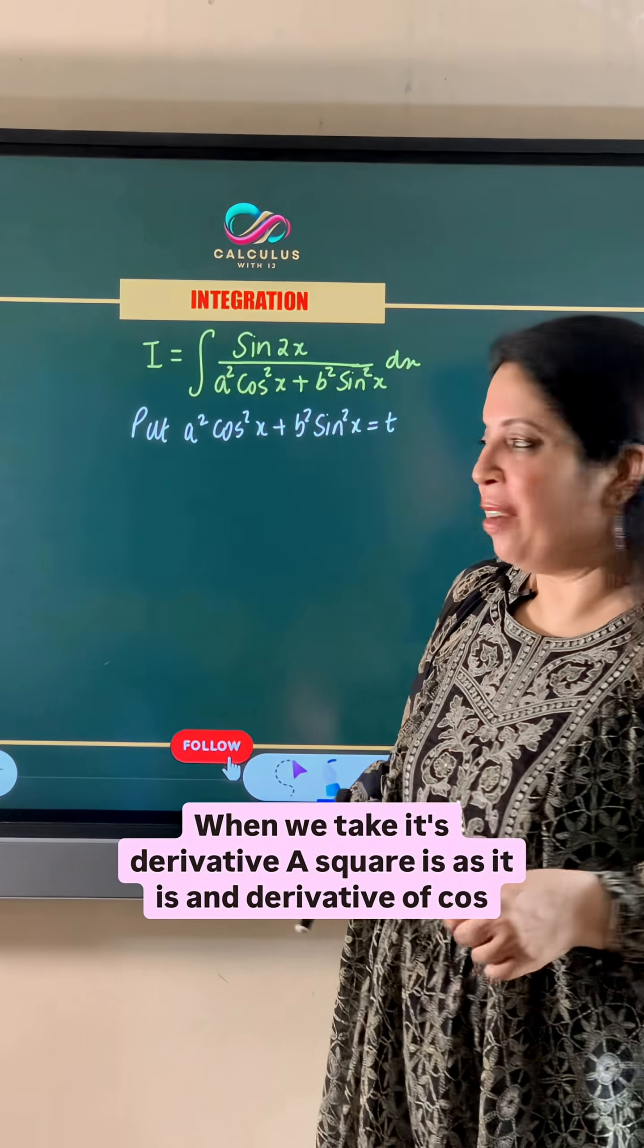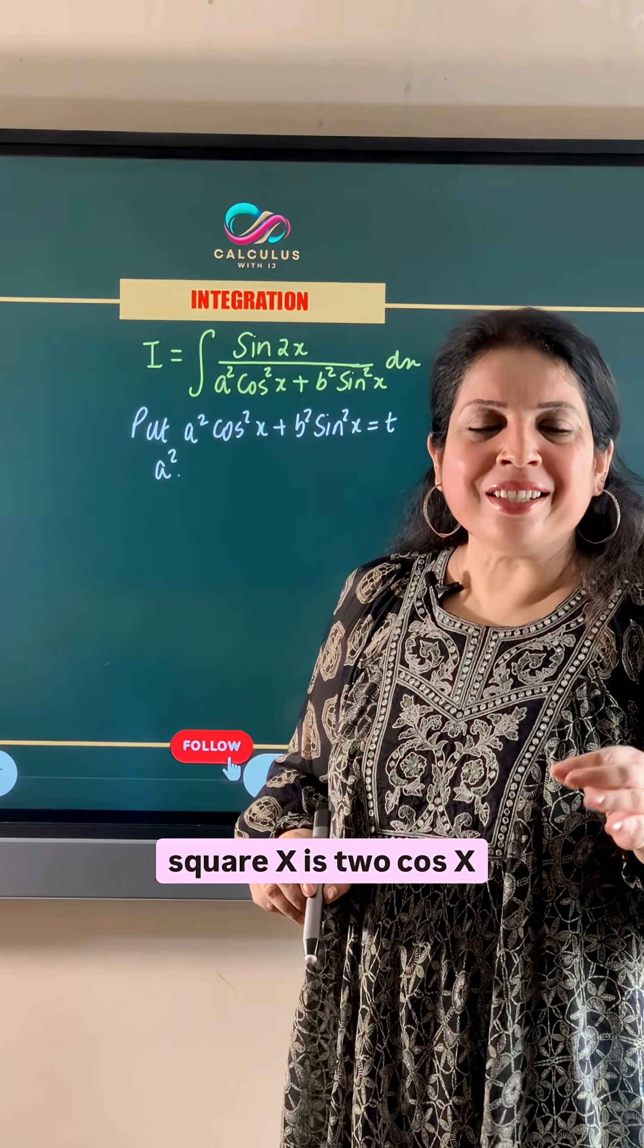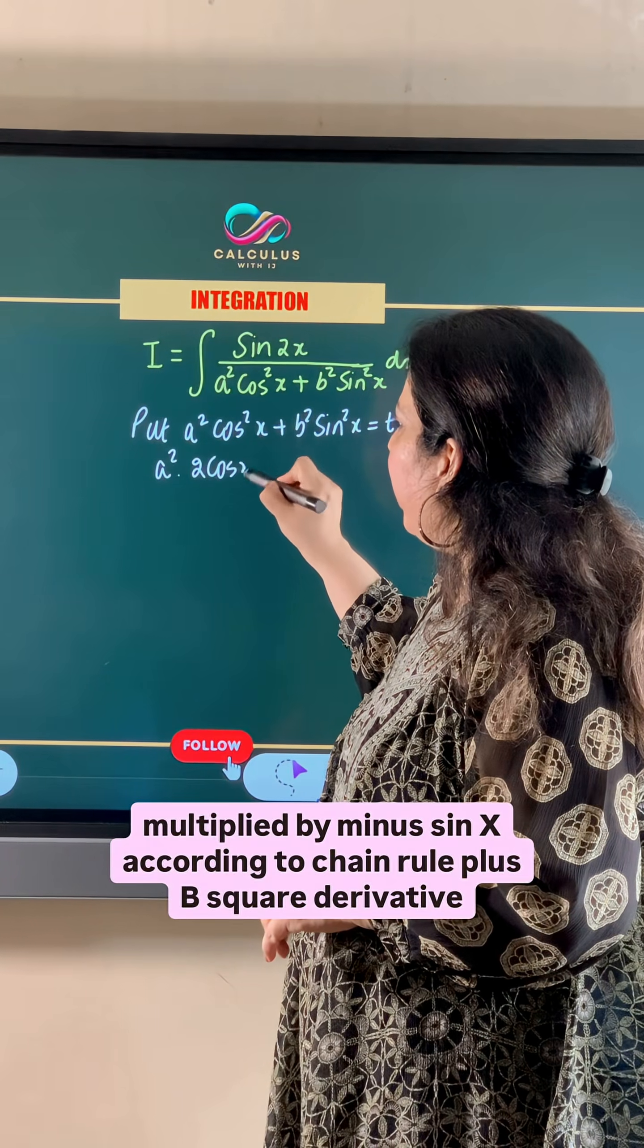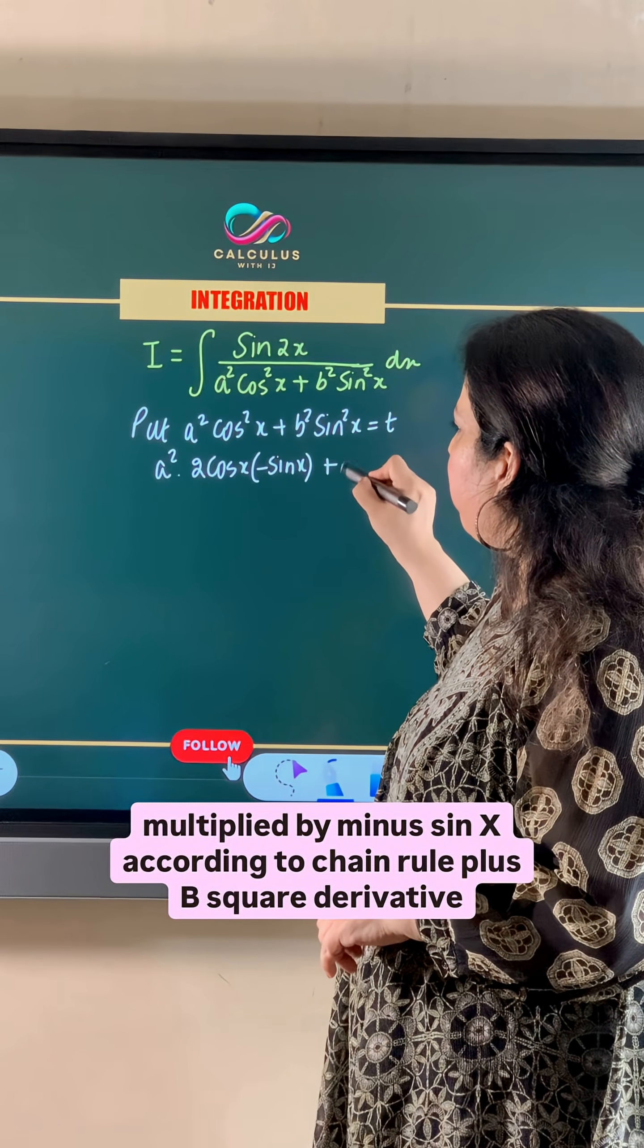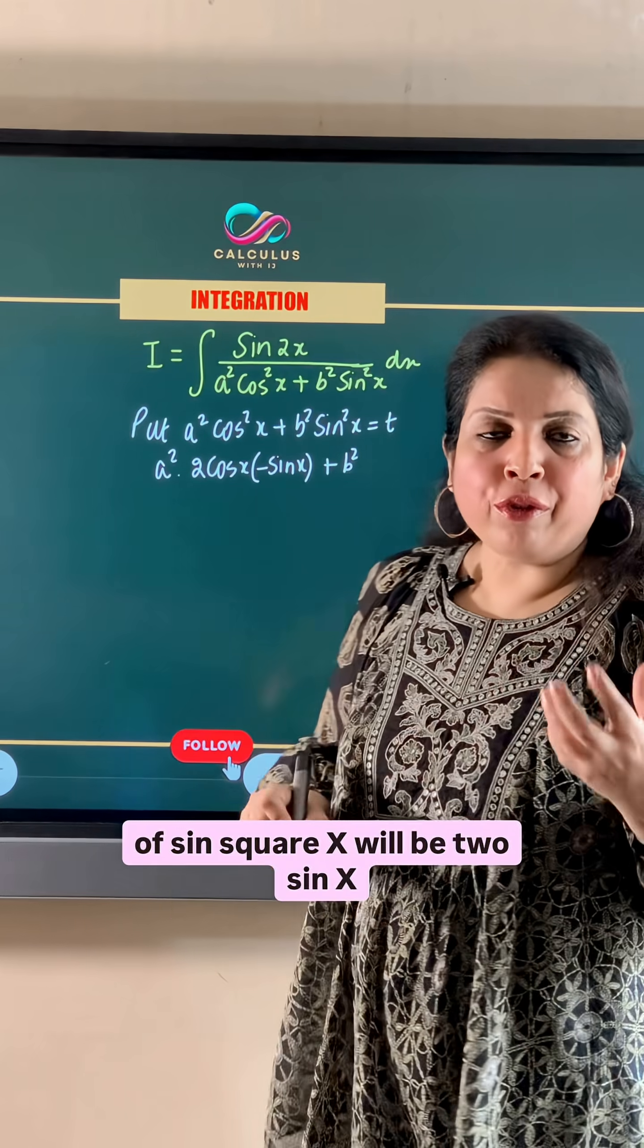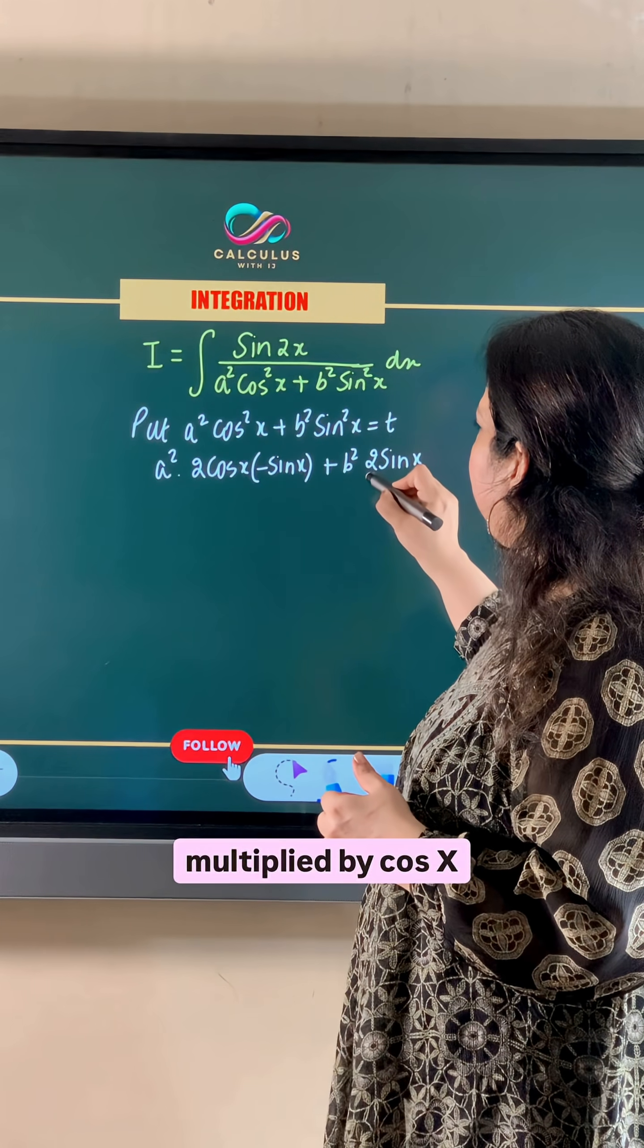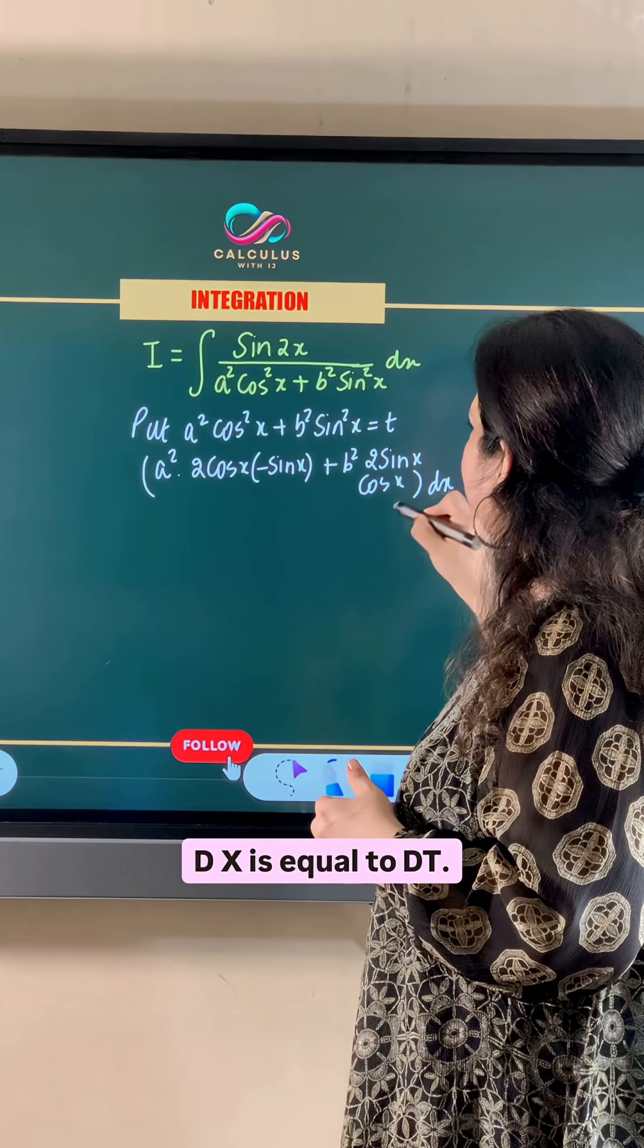When we take its derivative, a square is as it is and derivative of cos square x is 2 cos x multiplied by minus sin x according to chain rule. Plus b square, derivative of sin square x will be 2 sin x multiplied by cos x dx is equal to dt.